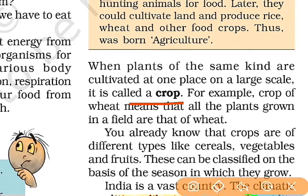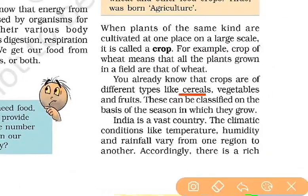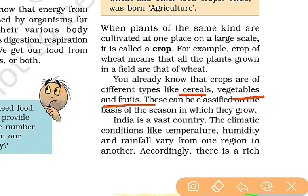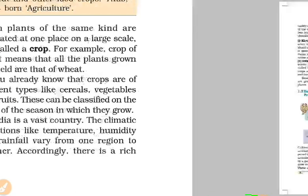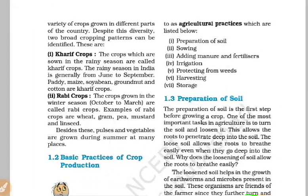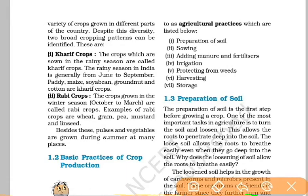We call it wheat — godhume — and we call it arusi, paddy. We call some vegetables and fruits. In India, temperature varies by area, and there are varying climatic conditions. Throughout the year, we have to talk about agriculture and production. For this, we have two types of seasons. We have to talk about Kharif crops — the rainy season, from June to September.